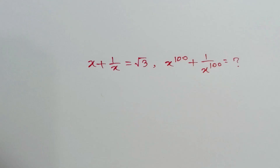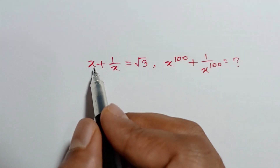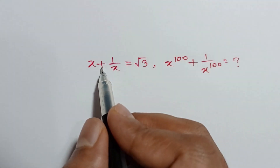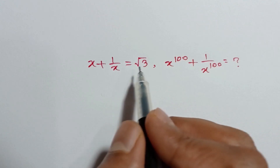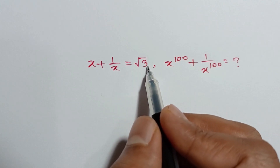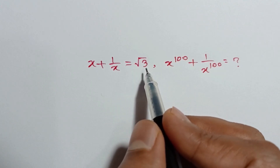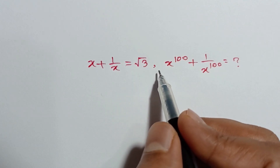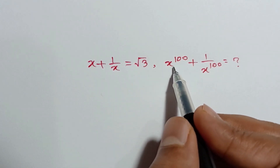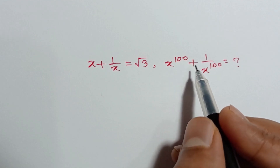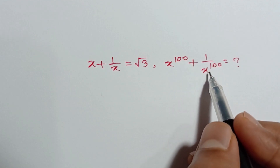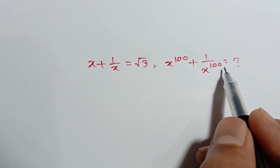Hi everyone. We have given x plus 1 over x is equal to square root of 3. We have to find the value of x to the power 100 plus 1 over x to the power 100.